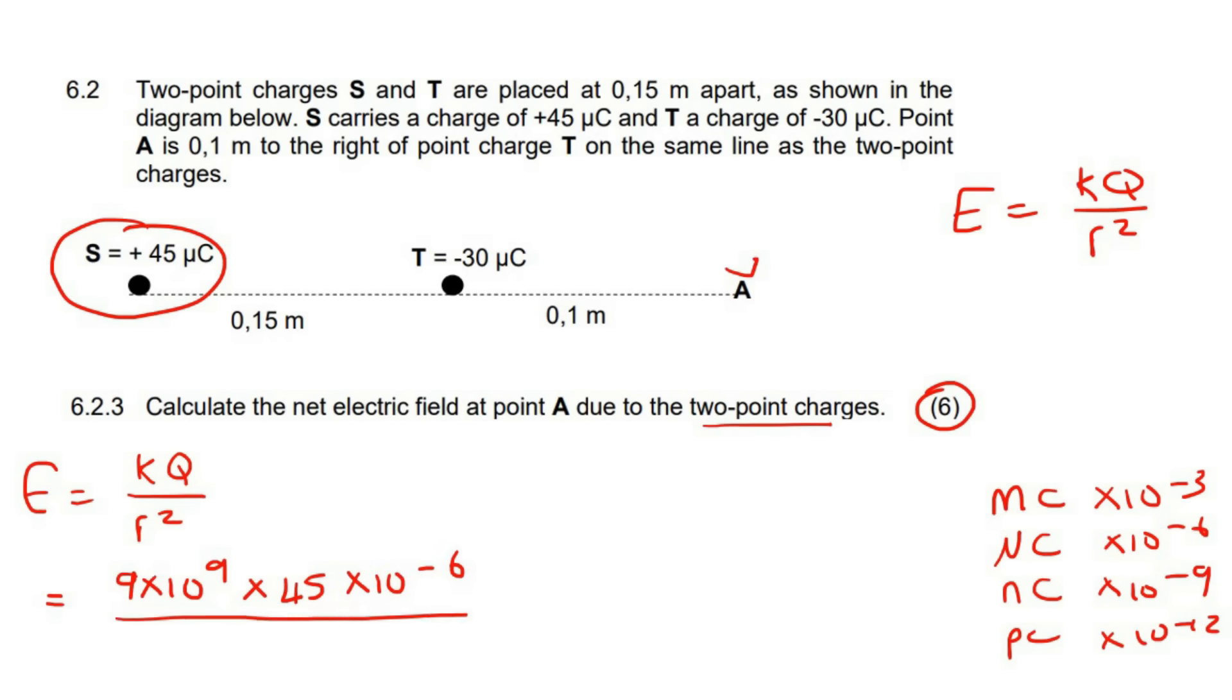Then the distance, a lot of learners get this part wrong, it's not 0.15, it is the distance all the way to A. So it'll be this plus this, which would be 0.25. And then don't forget to square that. Let's get the answer.